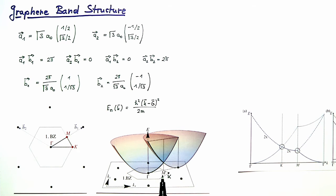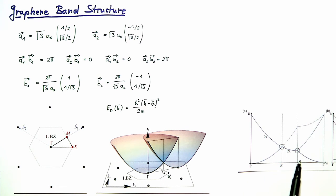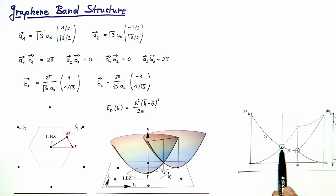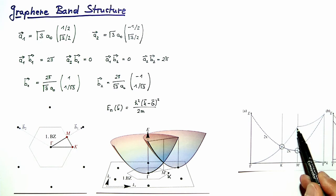Along the line from K to M, dispersions stemming from the two neighboring reciprocal lattice points give rise to a smooth continuous connection between the two high-symmetry points, forming this branch of the dispersion. Similarly, you can ask for higher energy states and obtain additional branches, which we do not discuss in detail. This essentially finishes the second part of the problem.